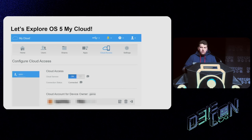We didn't have unlimited read/write access because the filesystem had some restrictions — some directories and mounting points were read-only. For example, we could not overwrite binaries. We had to be creative about leveraging this read/write primitive into remote code execution. One idea was to download the device configuration, modify where the device downloads firmware from, and rewrite it. However, we found an easier way.